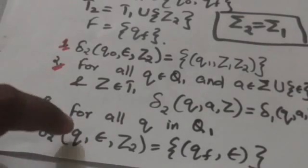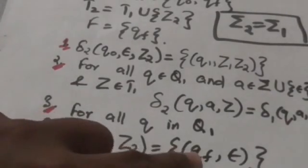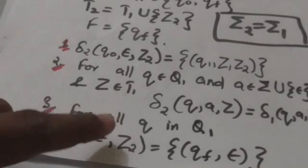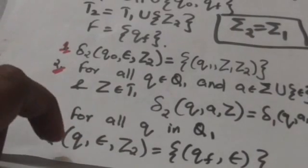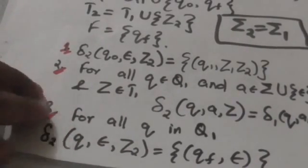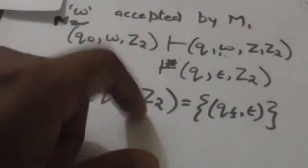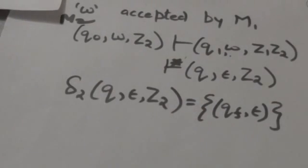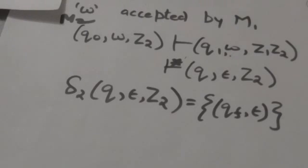M2 will jump to its final state because we have added this type of transition in M2 for all states Q of M2 which are also in M1. So the string w will also be accepted by pushdown automata M2. Thus M2 will accept the language L by final state, which is accepted by M1 by empty stack.